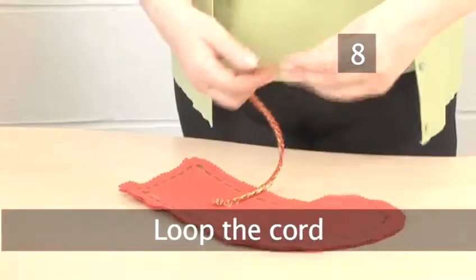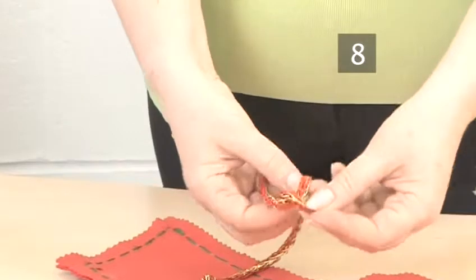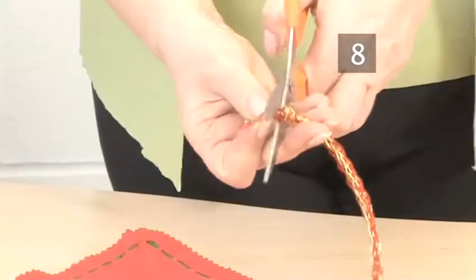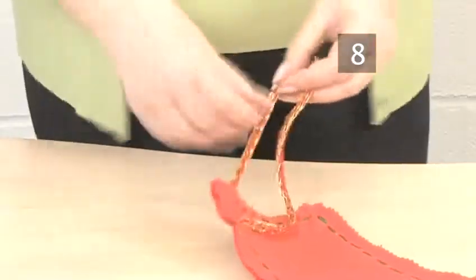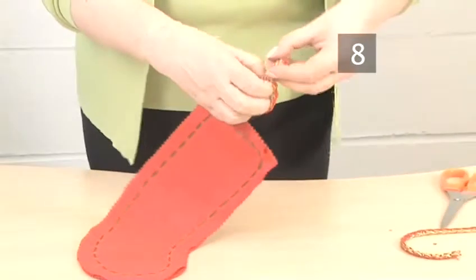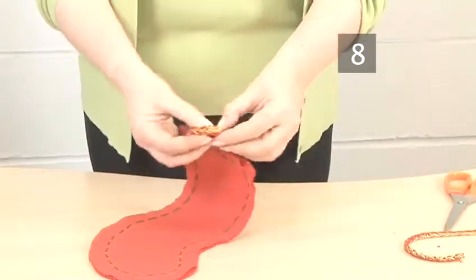Step 8. Loop the cord. Cut a length of cord and tie a knot in one end. Trim off the excess. Thread the other end through the hole in the stocking and tie it in a knot. Then tie both ends together to make a loop.